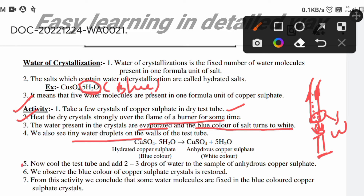Now cool the test tube and add 2 to 3 drops of water to the sample of anhydrous copper sulfate. After adding water, the white anhydrous copper sulfate turns back to blue copper sulfate. From this activity, we conclude that some water molecules are fixed in the crystal structure.